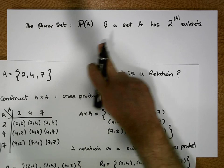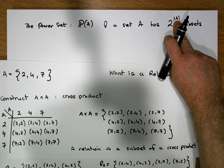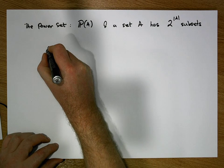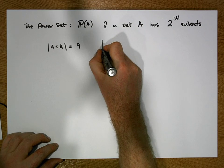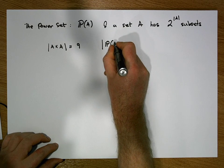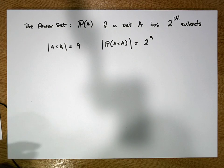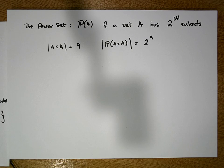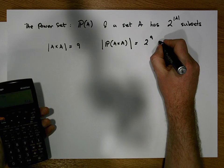The number of subsets we can create from a set is two to the power of the cardinality of that set. In our situation, the cardinality of A cross A is nine, so the cardinality of the power set of A cross A is two to the power of nine. And two to the ninth power — two times two, nine times over — equals 512.